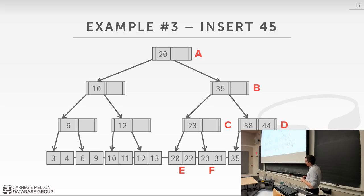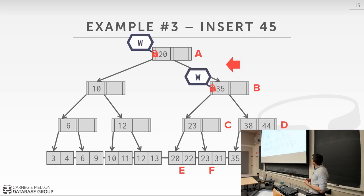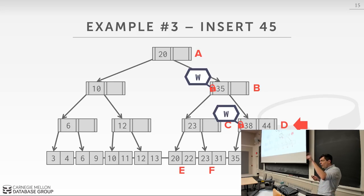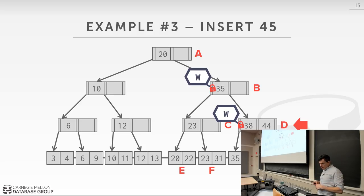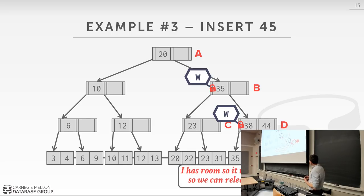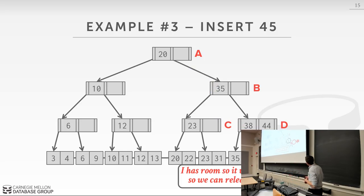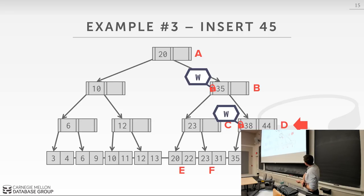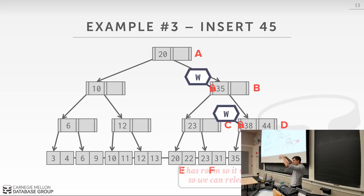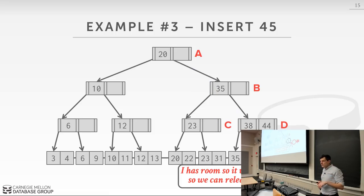For an insert of 45: get write latch on A, write latch on B, move down. We can release A because B has a free slot — no matter what happens below, B can absorb a new separator key. Get down to I, which also has room, so we release the latches on B and D all the way. The key insight: I couldn't release the latch on B earlier because I didn't yet know whether D had space. Once I see I has a free space, I know no split is needed, so B and D are safe to release.